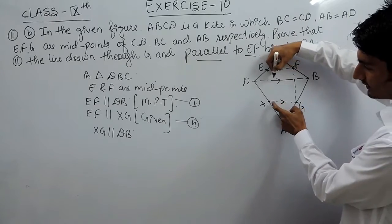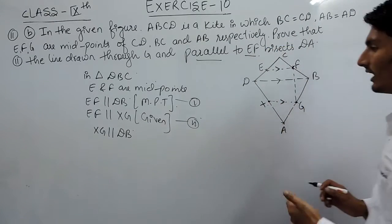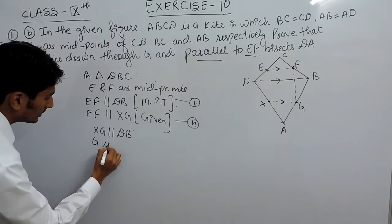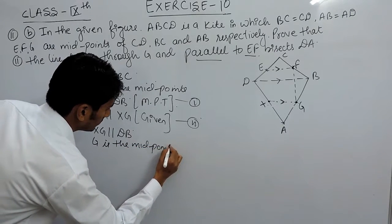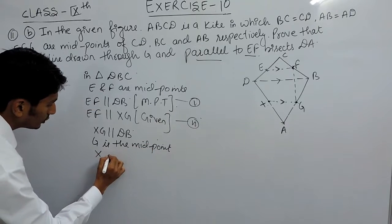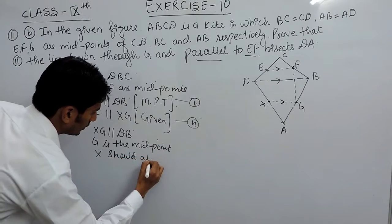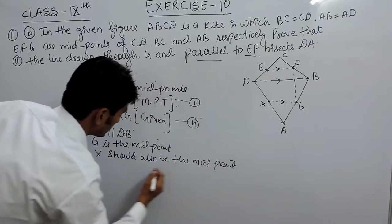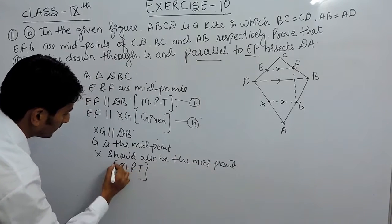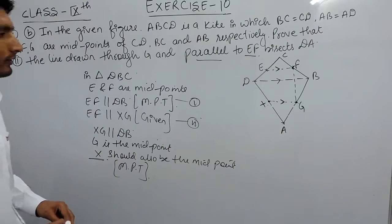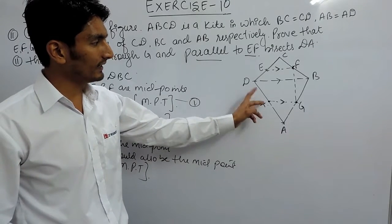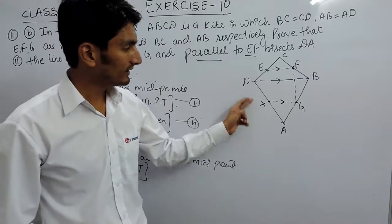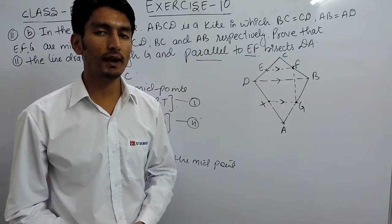Now I have proved that line XG is parallel to DB, and G is given as the midpoint. Again, by the midpoint theorem, if you draw a parallel line from a midpoint it should meet the midpoint of the other side. Since XG is parallel to DB and G is the midpoint, X should also be the midpoint — this is because of the midpoint theorem. Since X is the midpoint, this part and this part must be equal, and we can say X bisects DA. Thank you.